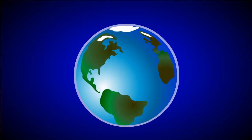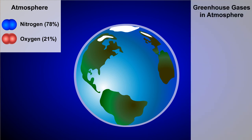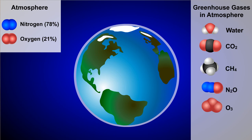Our atmosphere contains a number of different gases. It's mostly made up of nitrogen, about 78%, and oxygen, about 21%, but it also contains gases known as greenhouse gases. These include water vapor, carbon dioxide, methane, nitrous oxide, ozone, and chlorofluorocarbons, which are usually man-made. They're called greenhouse gases because these gases allow them to retain heat, leading to a warming of our atmosphere.